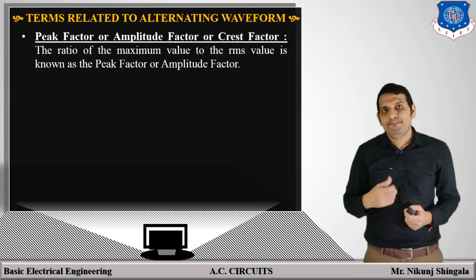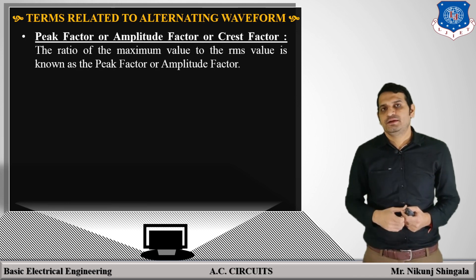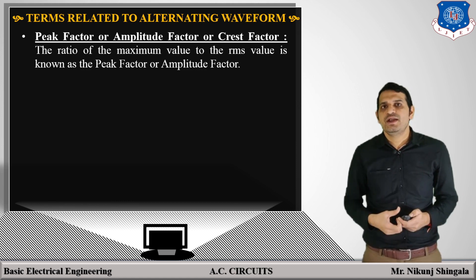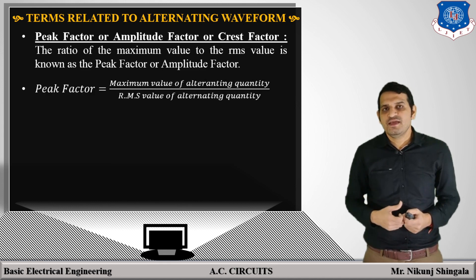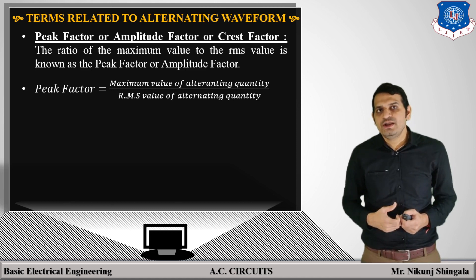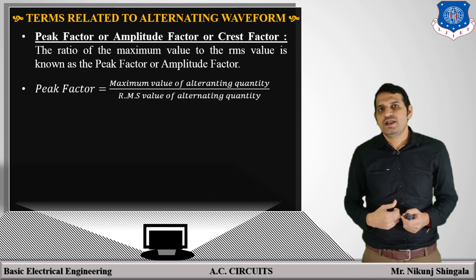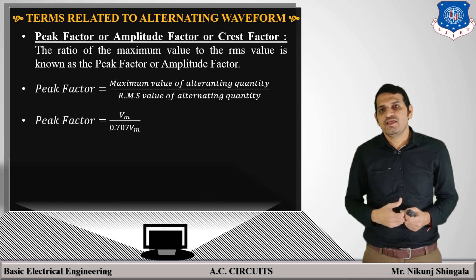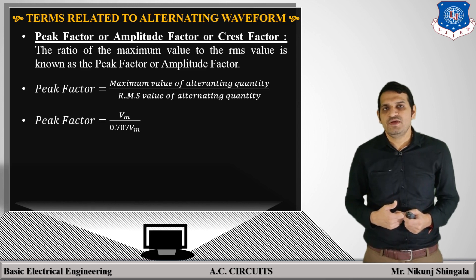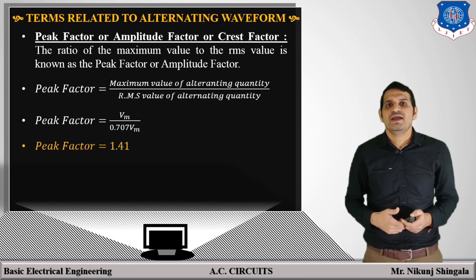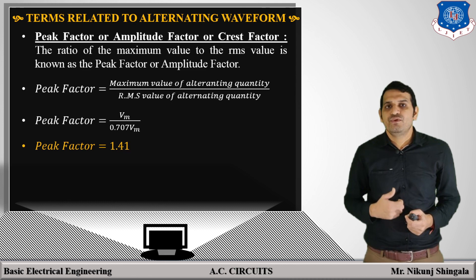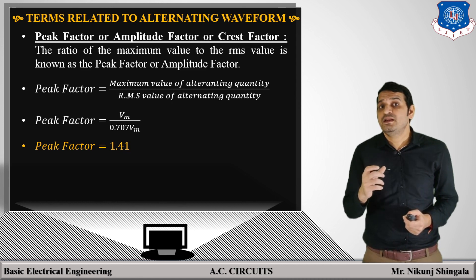The last one is peak factor, also known as amplitude factor or crest factor. The ratio of the maximum value to the RMS value of the alternating quantity is known as peak factor. Peak factor = maximum value / RMS value = Vm / 0.707Vm. Cancelling Vm gives peak factor = √2 = 1.41. Again, this peak factor is for a symmetrical waveform.